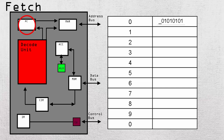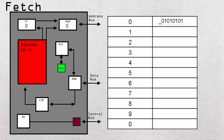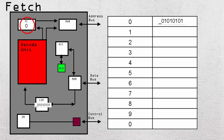First, the fetch phase. A CPU has a program counter, and it's usually set at zero to begin with. This binary number acts as an address of a register in the RAM. Since it's zero, it will go to the first register in the RAM. It will then wait for a control signal from the control bus. Let's say the signal is read. Now since the contents of the register is an instruction, it is sent through the address bus to the current instruction register. Now the program counter can be incremented by one, and the fetch phase is done.